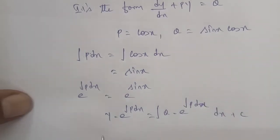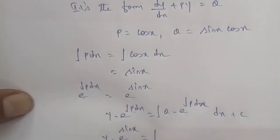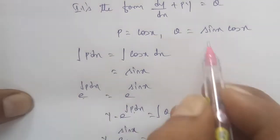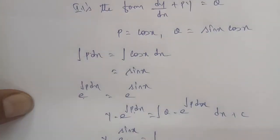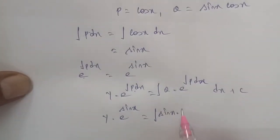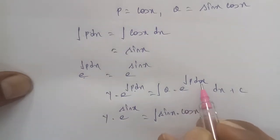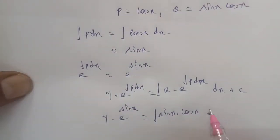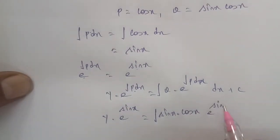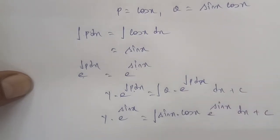Now substitute: y into e power of sin x equals integral of Q into e power of sin x dx, where Q is sin x cos x. So we have y into e power of sin x equals integral of sin x cos x into e power of sin x dx plus C.